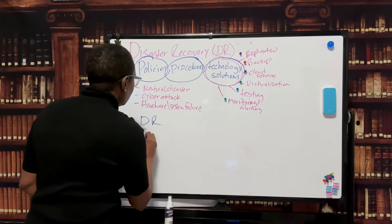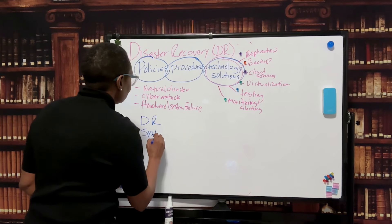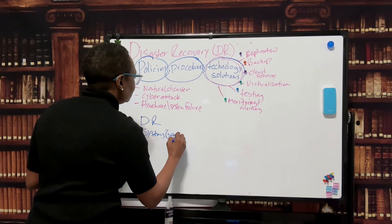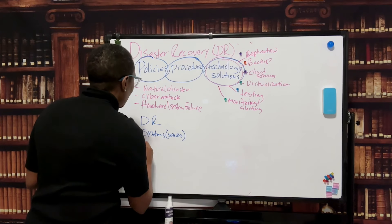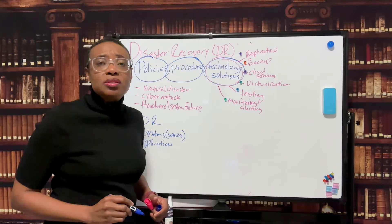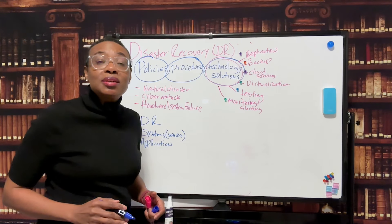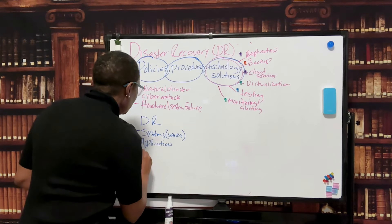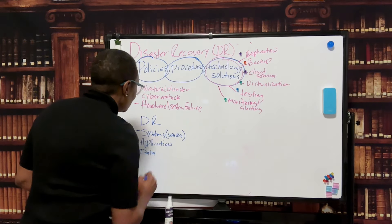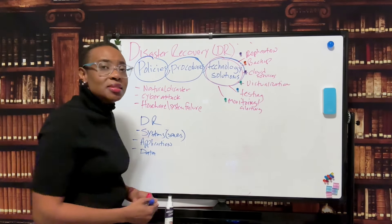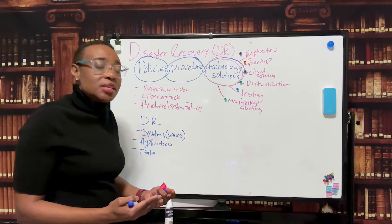So you need systems, can be servers. Then you need the application, because organizations run some type of mission-critical application that is critical to their business. And then you need your data. So you have a primary site that has these elements.